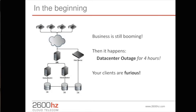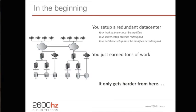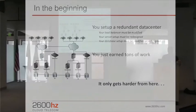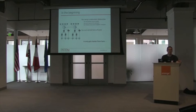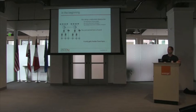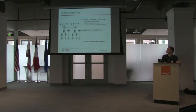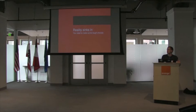Then of course a hurricane comes and knocks out the eastern seaboard, Amazon's down — oh no. So now we need geographic redundancy, and you have to duplicate everything you did in one data center to two data centers. As you can see, you're becoming less and less of a VoIP company, more and more networking, infrastructure, ops, web development — you're getting away from your core focus of selling voice.